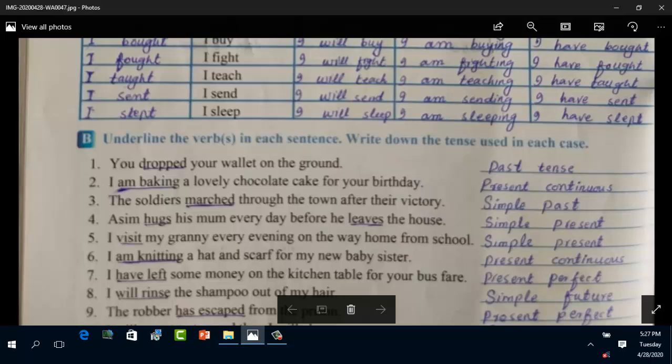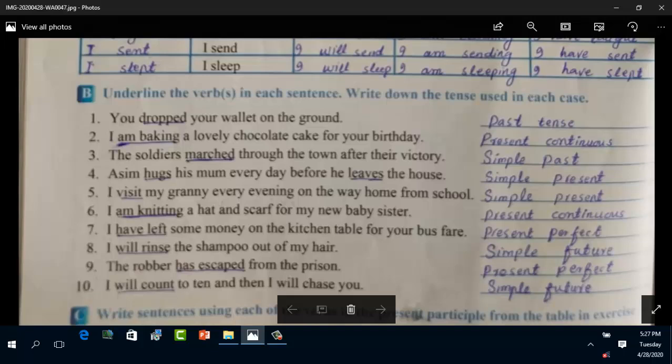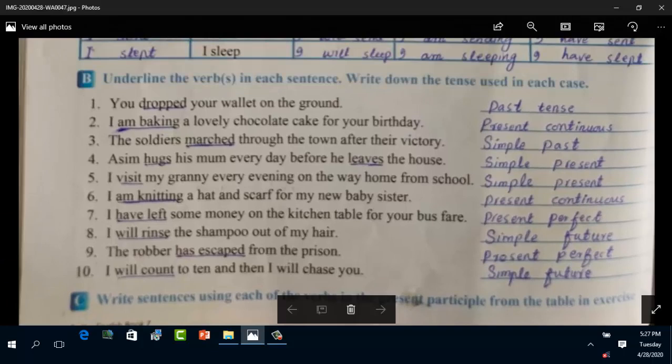I visit my granny every evening on the way home from school - 'visit,' simple present. I am knitting a headscarf for my newborn baby sister - 'I am knitting,' the process is still going on, so it is present continuous. I have left some money on the kitchen table for you for your bus fare - 'have left,' third form of the verb is used, it is present perfect. I will rinse the shampoo out of my hair - 'will rinse' means simple future. The robber has escaped from the prison - 'has escaped,' present perfect. I will count to ten and then I will chase you - 'will count' or 'will chase,' both are simple future. Now write ten sentences using each of the verbs in the present participle from the table in exercise A. This is your homework.